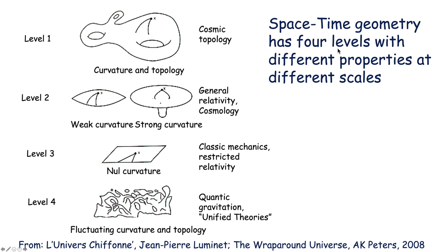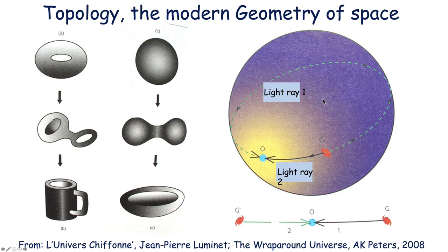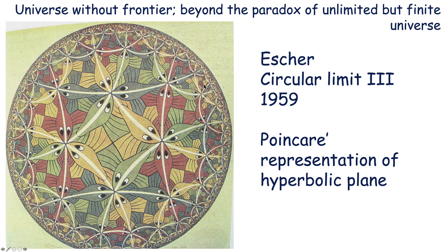Space-time geometry has different levels with different properties at different scales, so we can no longer apply one single geometry to the entire extent of the universe. We can imagine a topology like a donut, which is actually equivalent to a cup, or a sphere equivalent to a bowl. So in a way, the topology of the modern universe is still very much in the making.